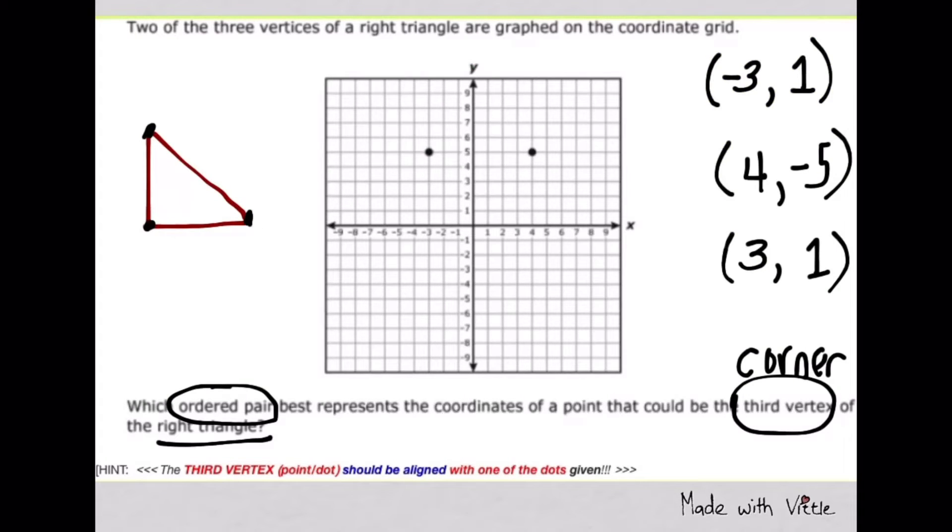Which ordered pair best represents the coordinates of a point that could be the third corner of a right triangle? We know a right triangle has three corners and a right angle inside. As you can see, two corners are already given. What we're going to do is find the third corner. Draw a right triangle first, and notice that one pair of corners are aligned with each other to make one corner a right angle. The third corner must be aligned either on this dot or the other.